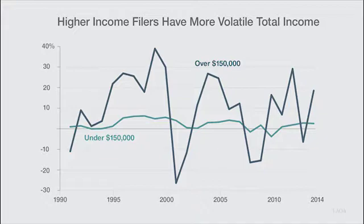As we see here, the income of filers under $150,000 a year doesn't change much from year to year, while income of filers over $150,000 varies a lot. The state relies more on the volatile part of its tax base than on the stable part.